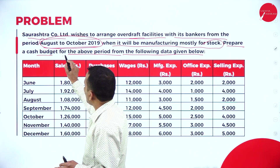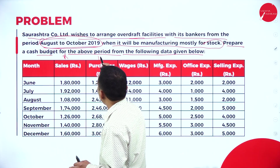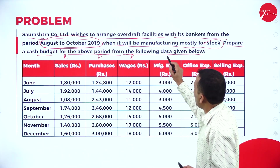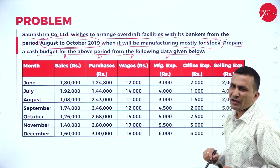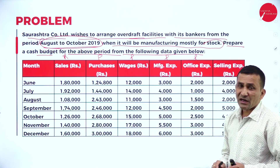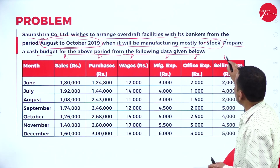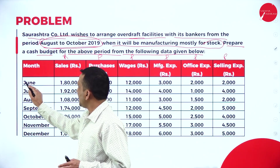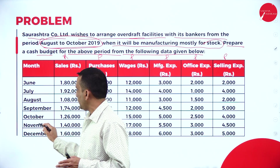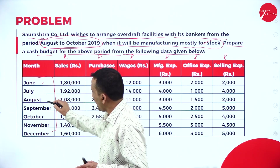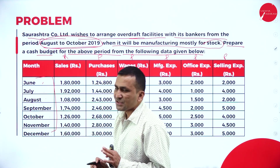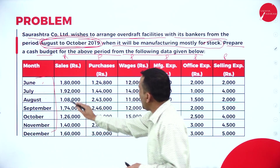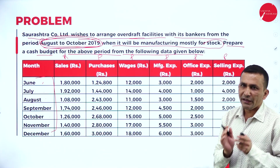Cash is no doubt a receipt. Purchase comes under payment; wages come under payment; manufacturing expense comes under payment; office expense comes under payment; selling expense comes under payment. Data is given for seven months: June, July, August, September, October, November, December. You need to prepare only for August to October, so you select the relevant data from what is given.